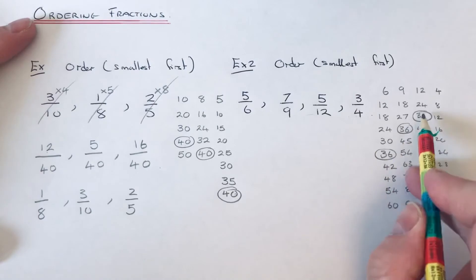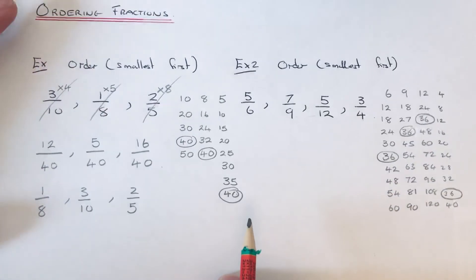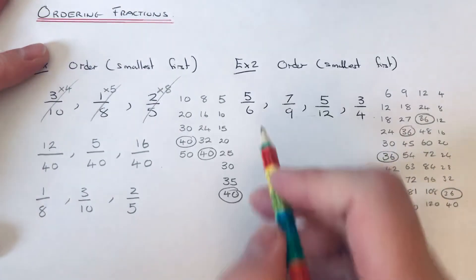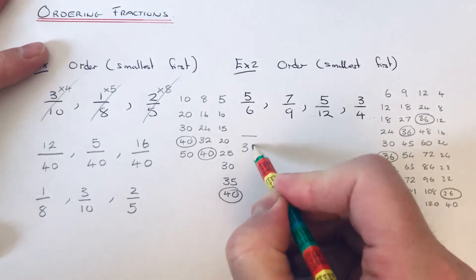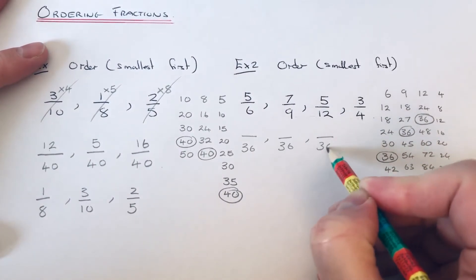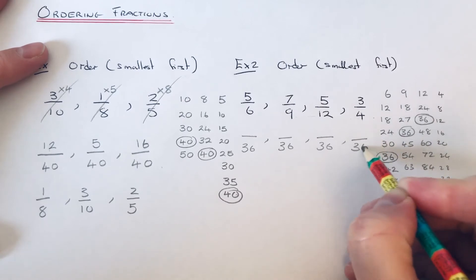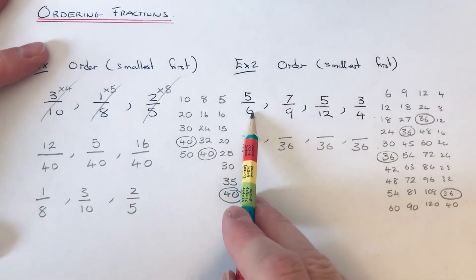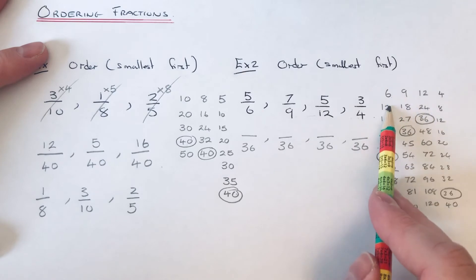That's what we're going to change. We're going to change all the denominators to 36. How many times did 6 go into 36? It went 1, 2, 3, 4, 5, 6.